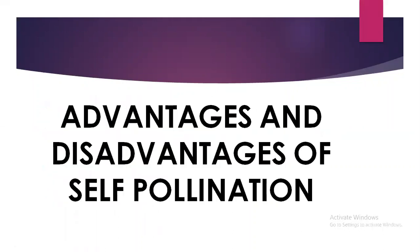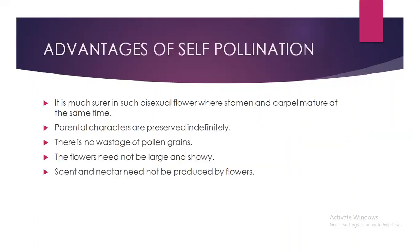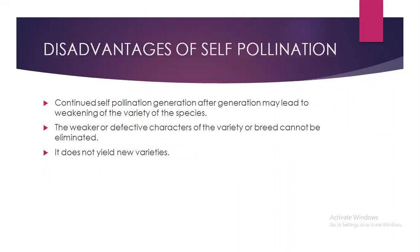Advantages of self-pollination: it is much surer in bisexual flowers where stamen and carpel mature at the same time; parental characters are preserved indefinitely; there is no wastage of pollen grains; the flowers need not be large and showy; and scent and nectar need not be produced. Disadvantages: continued self-pollination generation after generation may lead to weakening of the species, defective characters cannot be eliminated, and it does not yield new varieties.